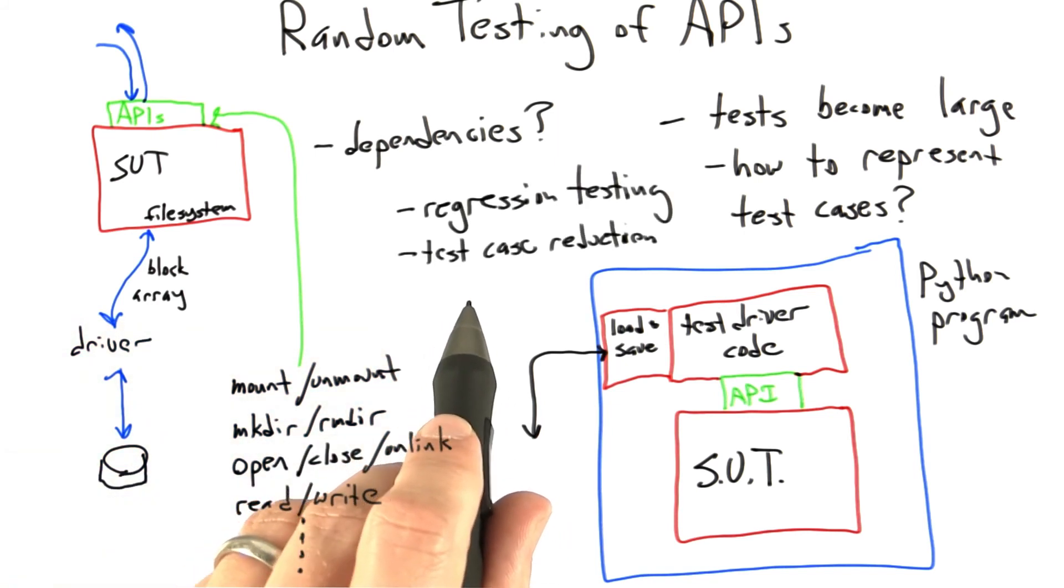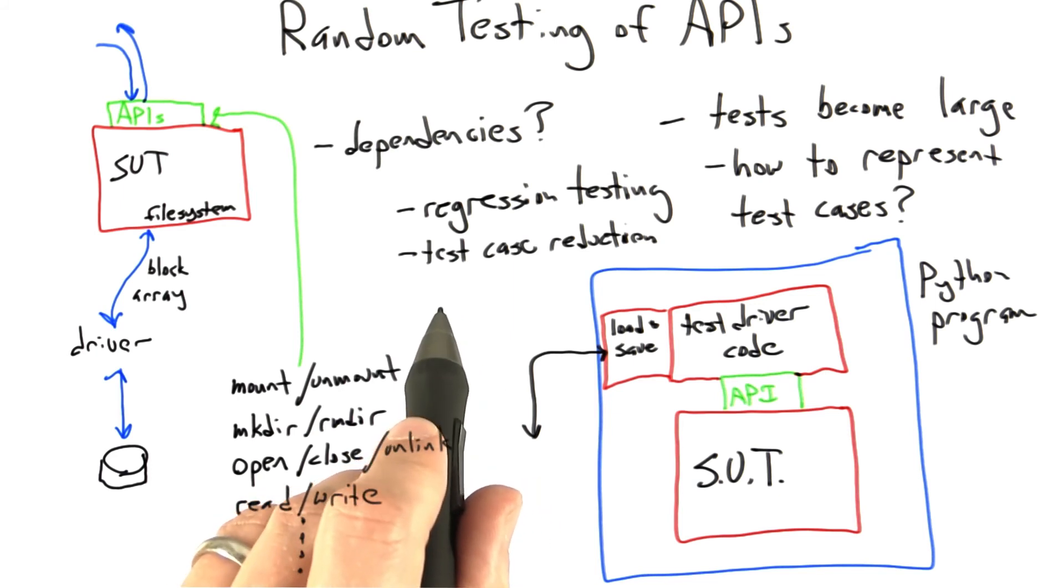And the second reason is that it's often the case that when random tests become extremely large, we need to turn them into first class objects, that is to say objects living on disk using some sort of a save and load routine in order to perform test case reduction.